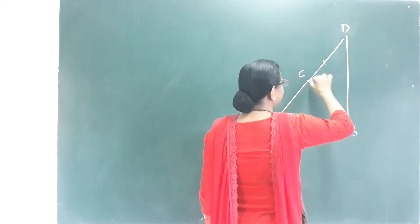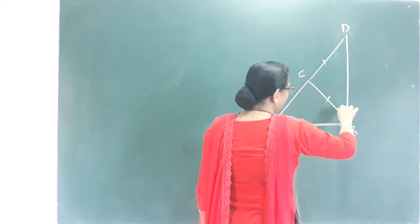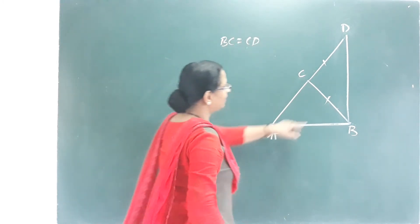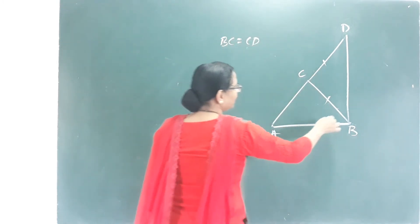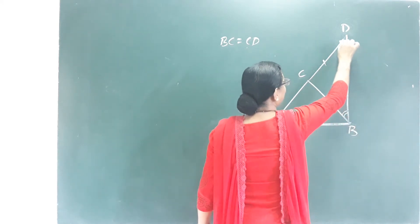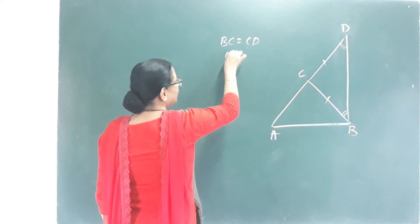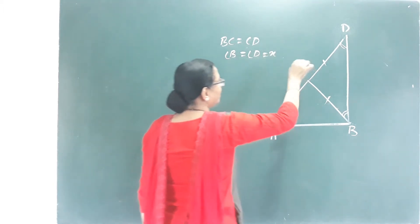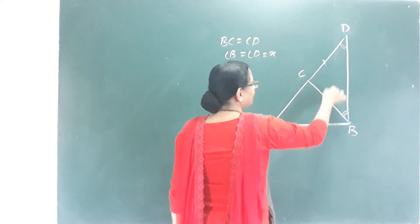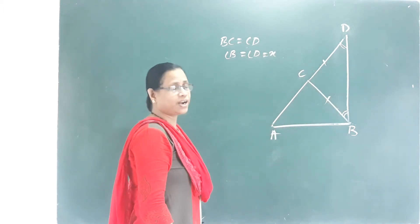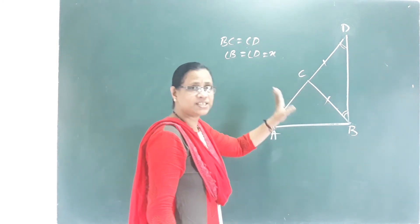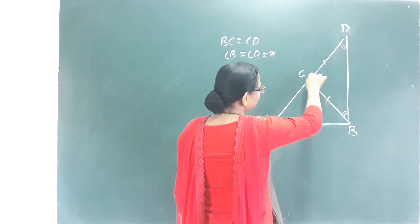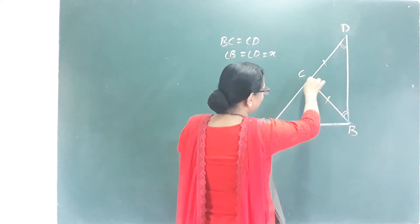First point: we have the same length. BC is equal to CD — these two lengths are the same. These two angles are the same: angle B is equal to angle D, equal to X. Side opposite angles are equal. This point is the third vertex of the triangle.